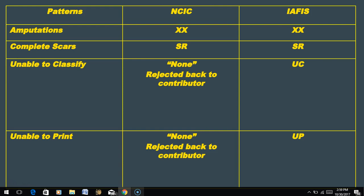What if we have some odd fingerprints? If a person is missing a finger, we put two X's in those boxes - the same for both NCIC and AFIS. If the fingerprint is scarred and unable to classify, we use SR for both systems. If the fingerprint is smudged or smeared and unable to classify: with NCIC, we send the card back to the contributor asking them to roll another card. With AFIS, we put UC meaning unable to classify. If we're unable to print the finger at all - say due to a handicap - with AFIS we put UP, but with NCIC we send the card back and ask them to try again.